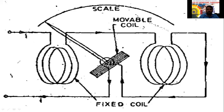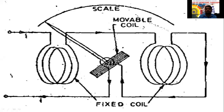Based on the connection of the moving coil and fixed coil — series, parallel, or a combination — the instrument acts as an ammeter, voltmeter, or wattmeter. This is the operating principle of the dynamometer.